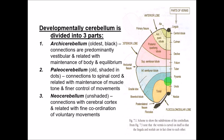The most evolved part is the neocerebellum, well developed in human beings. It is mainly connected to and controlled by the cerebral cortex, and is important for fine coordinated movements and voluntary movements — such as writing, drawing, painting, and skilled movements.